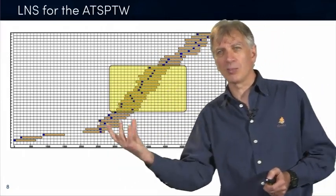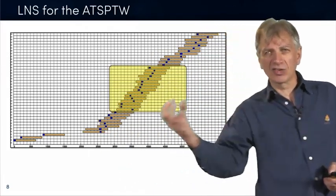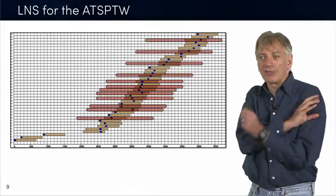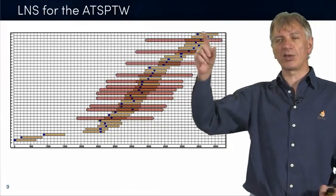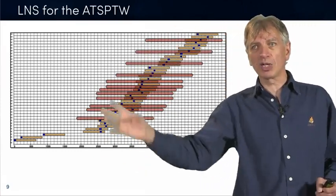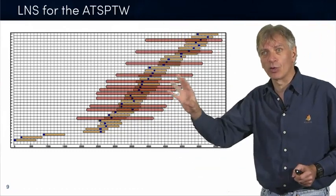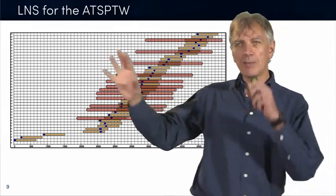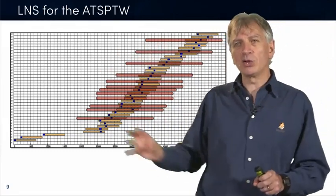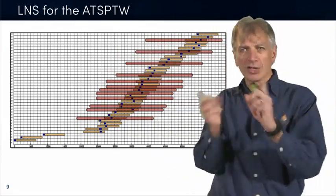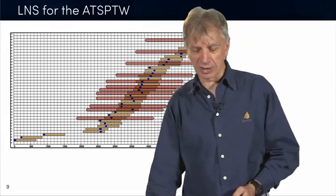So this is very structure-based. You are basically looking at which tasks are consecutive inside the schedule. You can do something completely random. Pick up a random set of tasks and fix the rest and re-optimize the tasks that you have randomly selected. That's also large-neighborhood search. So you can imagine a variety of neighborhoods and you can re-optimize everyone and you can alternate between them. That's what large-neighborhood search is about.